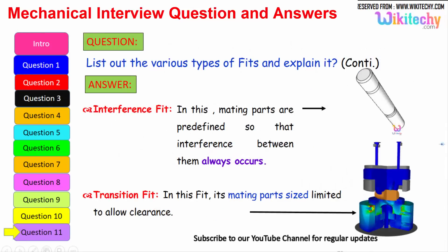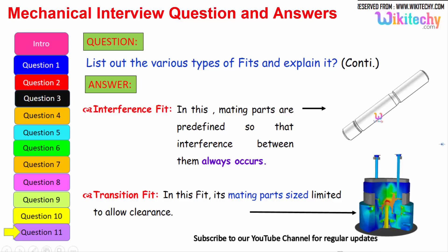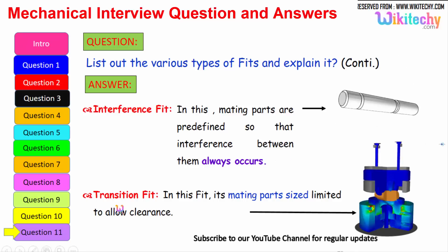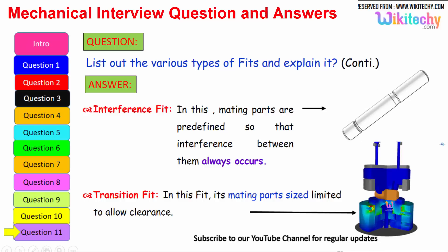If you talk about the interference fit, here is the one which is connected to the other one. In this, the mating parts are predefined so that interference between them always occurs. The final transition fit: in this fit the mating parts size is limited to allow clearance. You should not have exact fitting. It may break. You can see the greenish one. That is your transition fit.